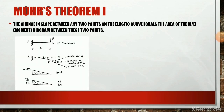Consider a cantilever beam AB of length L carrying a point load P at the free end B. The bending moment at B is zero because there is no perpendicular distance, so moment at B equals 0. The moment at A equals force multiplied by perpendicular distance, that is P×L. So M = PL at A and M = 0 at B. We draw the bending moment diagram; then the M/EI diagram has a maximum value of PL/EI at support A.